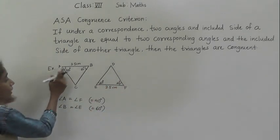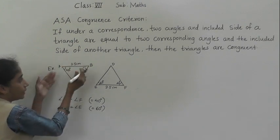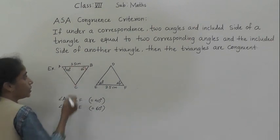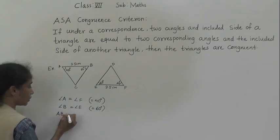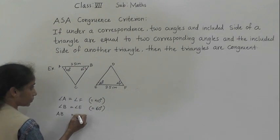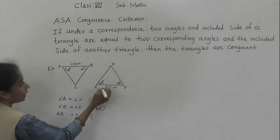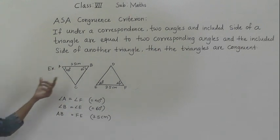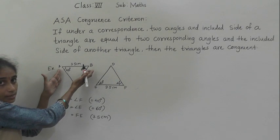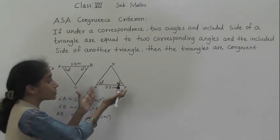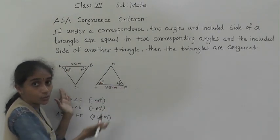Now the included side between both angles — which is the included side? Side AB is the included side between these two angles. AB is equal to EF — both have 3.5 cm measurement. So two angles of this triangle and the included side are equal to the two angles of the other triangle and the included side. So both these triangles are congruent by angle-side-angle criterion.